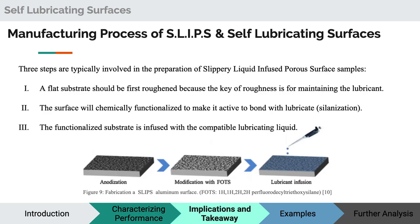How to manufacture self-lubricating surfaces and SLIPS — they have similar manufacturing but differ in the first step. We have three steps. In the first step, for SLIPS we roughen the flat substrate because roughness is the key to maintaining lubricant on it, and for self-lubricating surfaces we make a porous substrate. In the second step, we functionalize the surface to make it active and able to bond with lubricant. And in the last step, we infuse the surface with lubricating liquid. You can see an example of fabricating a SLIPS aluminum surface in the figure.